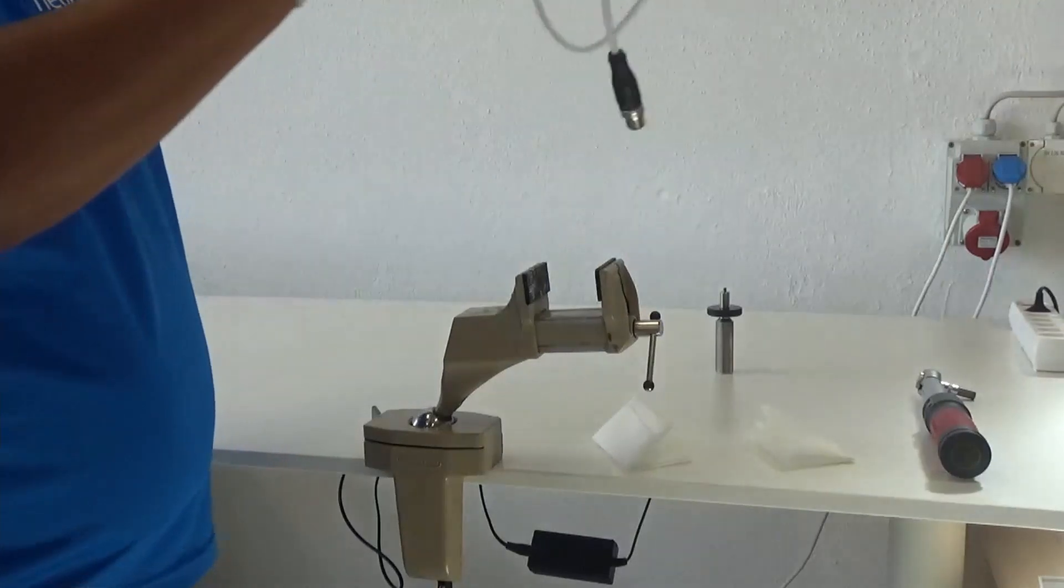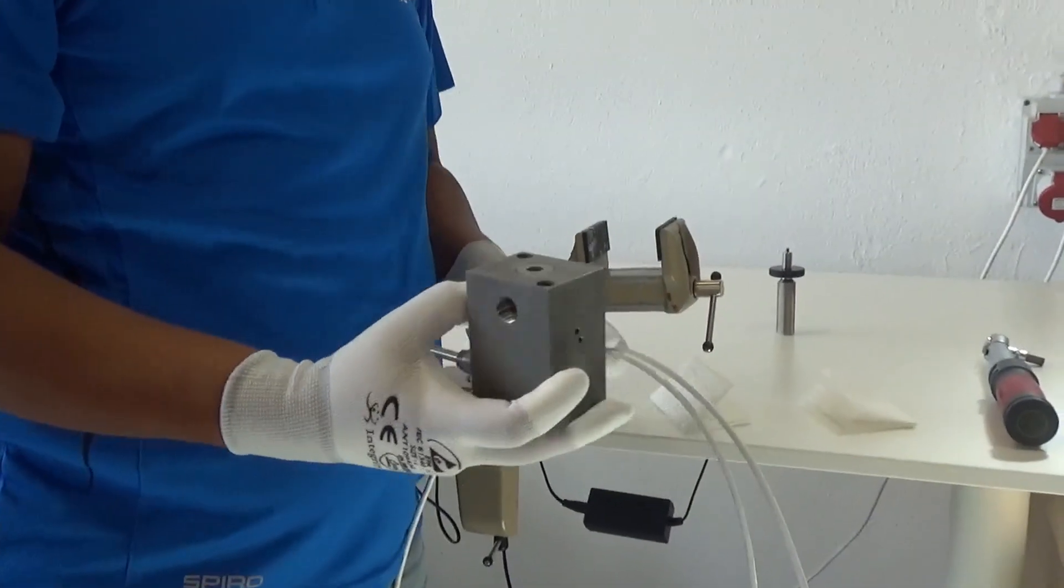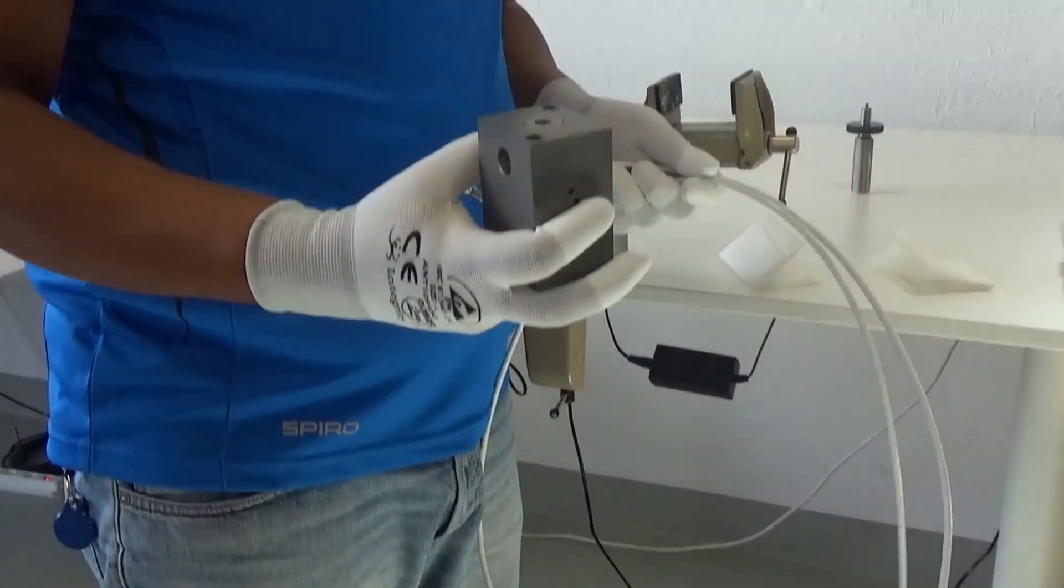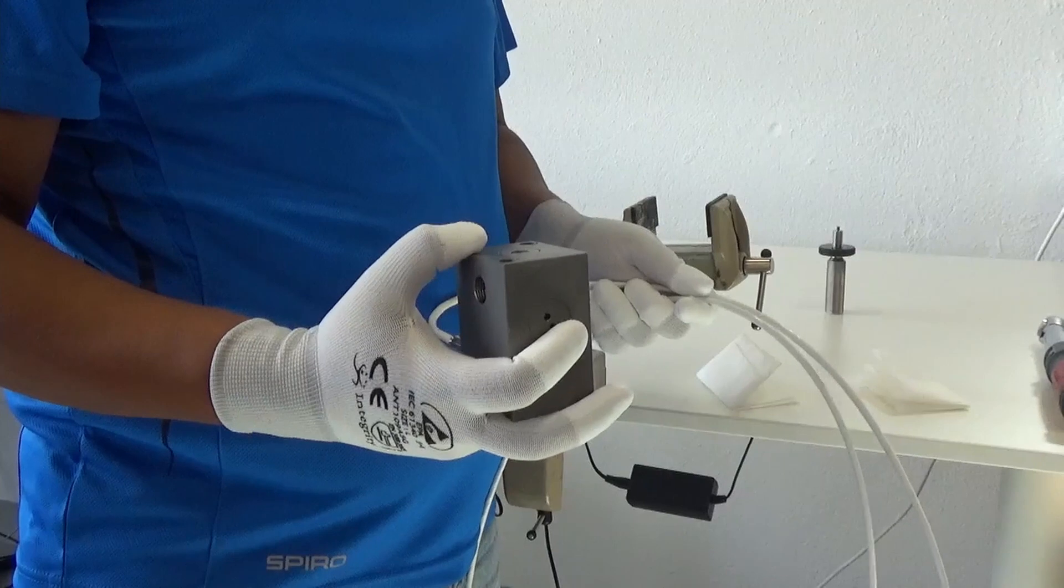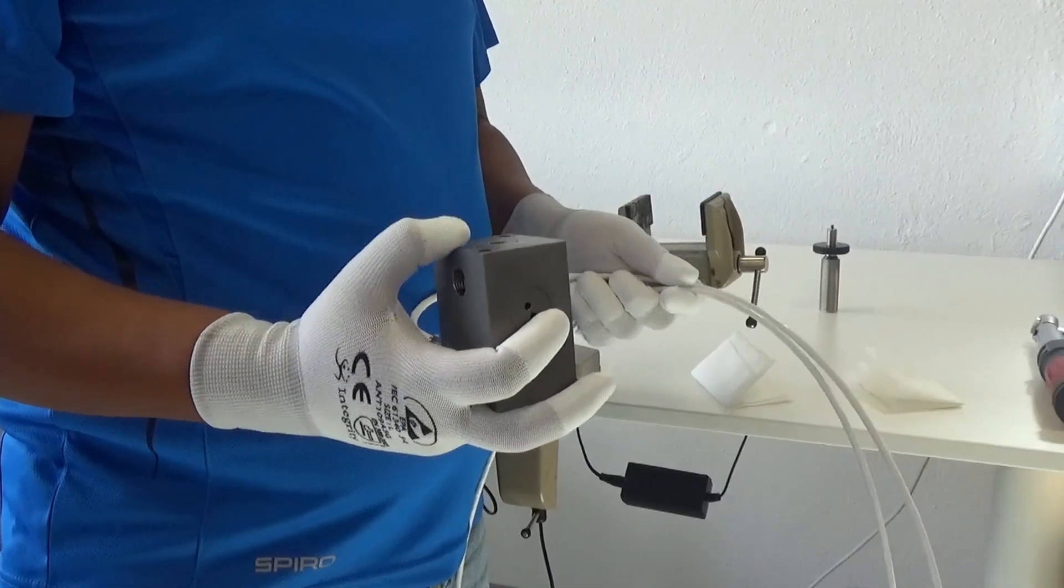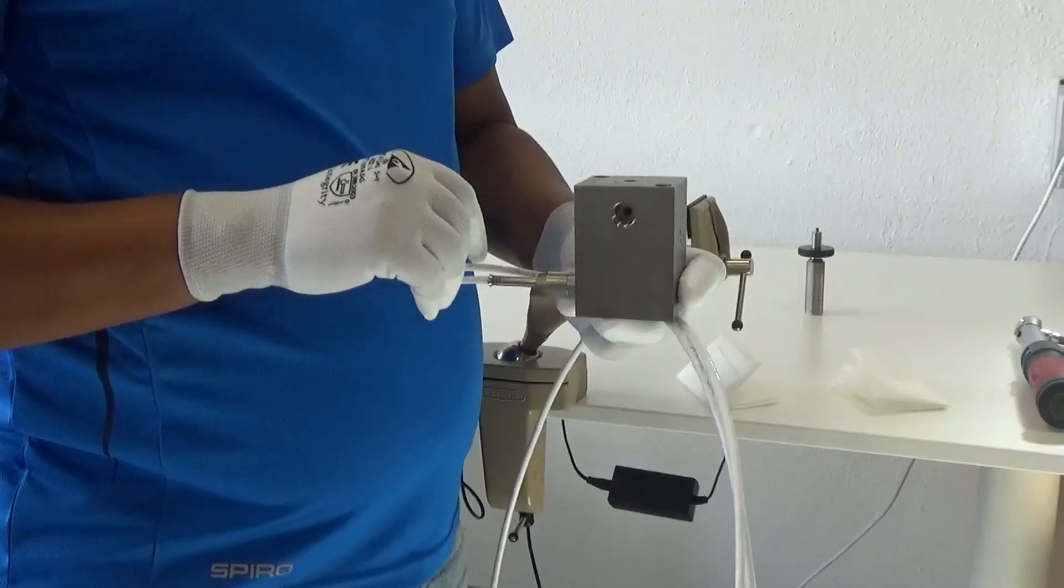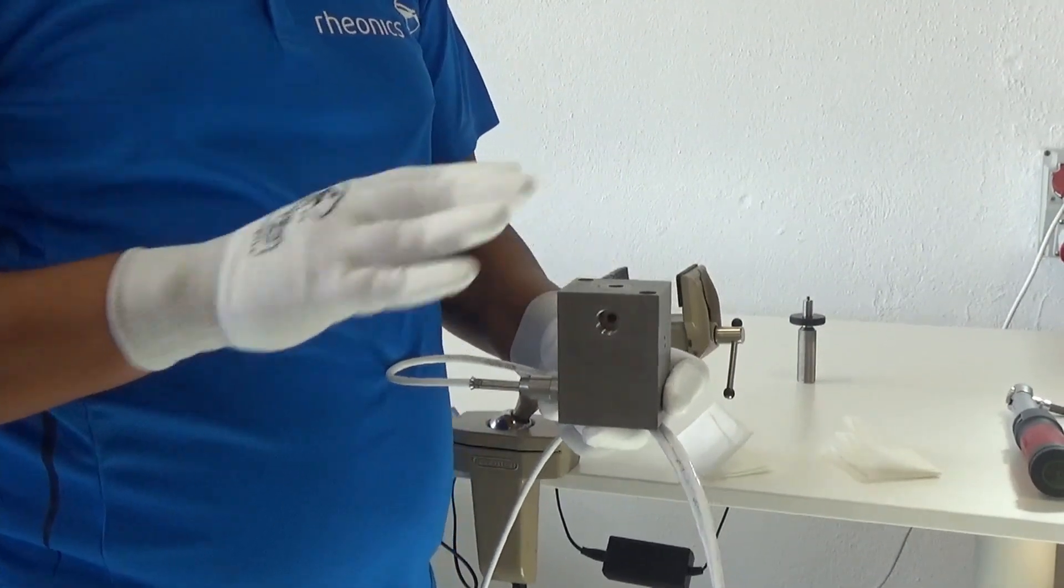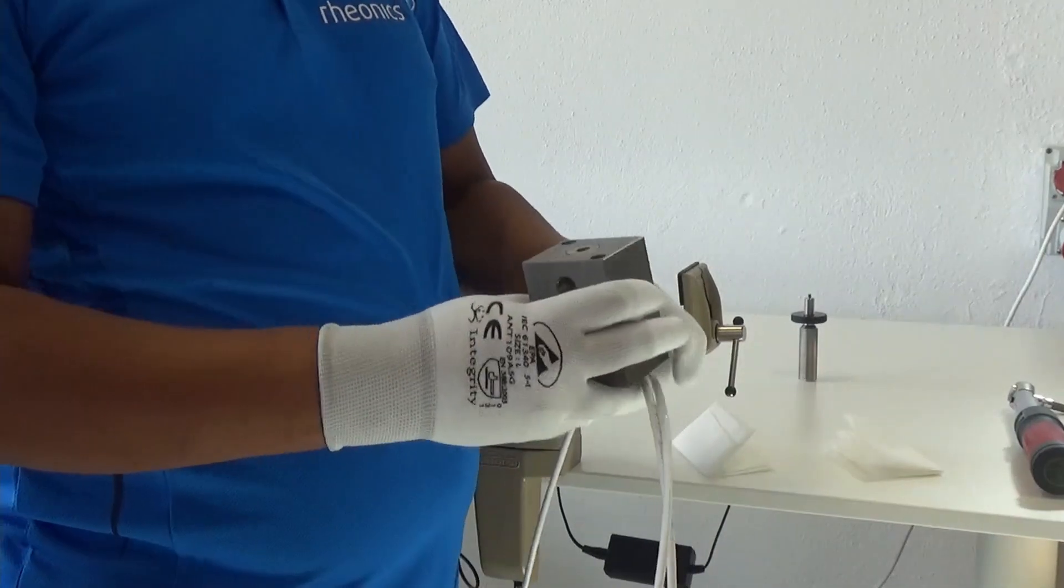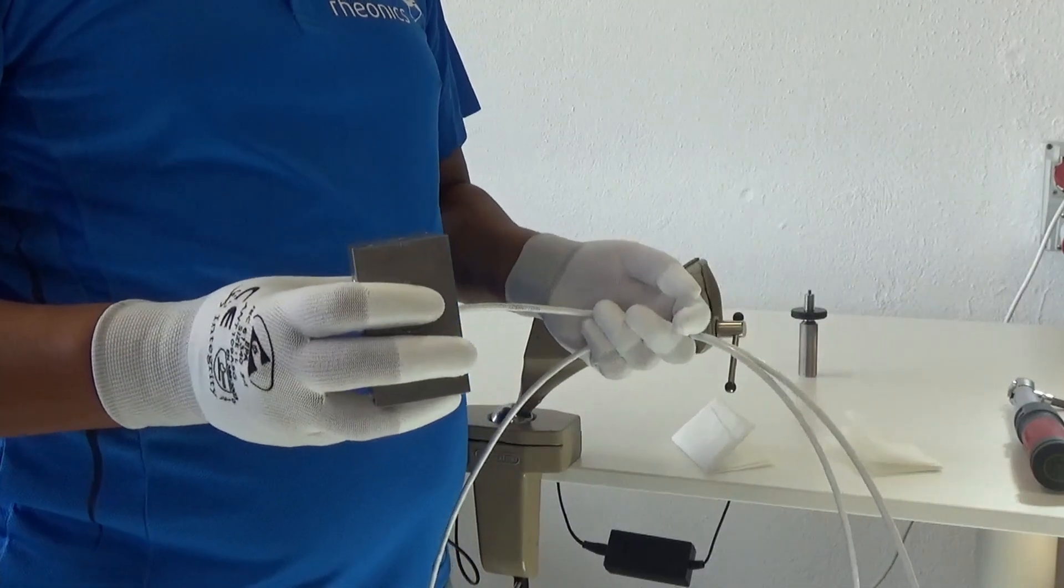Today we are going to talk about the Rheonix DVM, the high pressure, high temperature density and viscosity sensor. This monitors density, viscosity and temperature of your sample at the same time. Pressure wise it's rated up to 2000 bar which is 30,000 psi and temperature wise it's rated up 200 degrees centigrade which is about 450 degrees Fahrenheit.